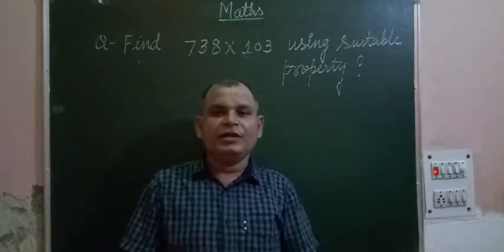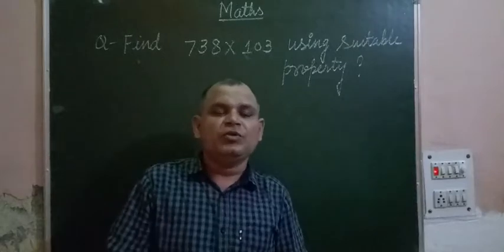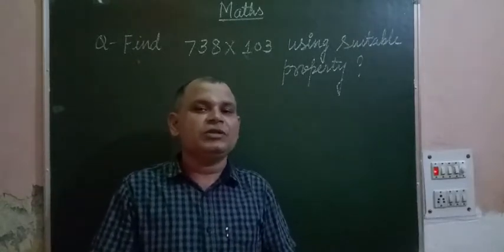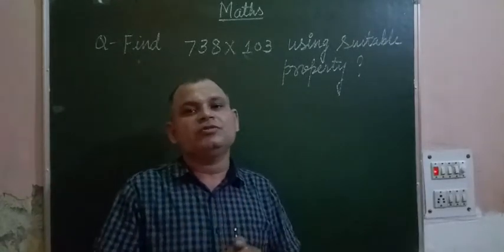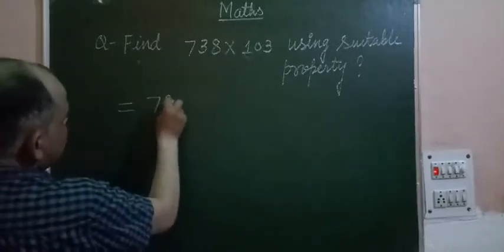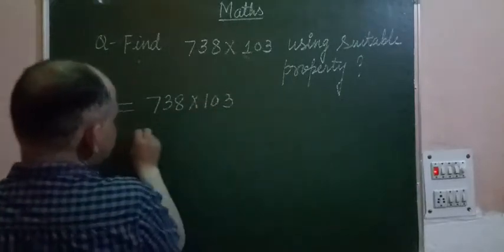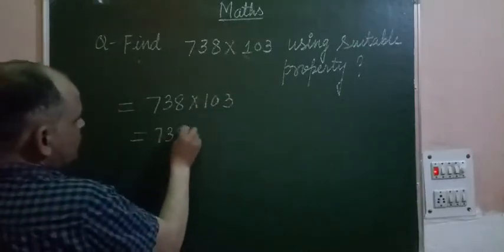One of them is the distributive property, so we will use this property in this question and solve it immediately. We start with 738 into 103, and we write 103 in terms of two numbers like 100 plus 3.